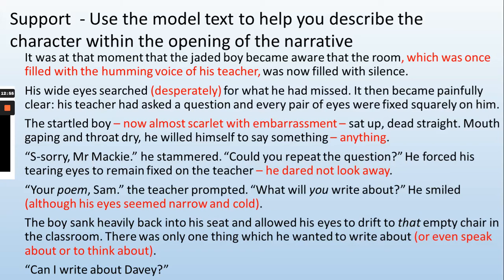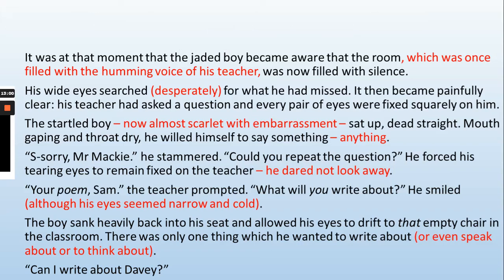I'm going to read through my example with my highlighted feature. 'It was at that moment that the jaded boy became aware that the room, which was once filled with the humming voice of his teacher, was now filled with silence. His wide eyes searched desperately for what he had missed. It then became painfully clear. His teacher had asked a question, and every pair of eyes were fixed squarely on him. The startled boy, now almost scarlet with embarrassment, sat up dead straight. Mouth gaping and throat dry, he willed himself to say something, anything. Sorry, Mr. Mackie, he stammered, could you repeat the question? He forced his tearing eyes to remain fixed on the teacher. He dared not look away. Your poem, Sam? the teacher prompted. What will you write about? He smiled, although his eyes seemed narrow and cold. The boy sank heavily back into his seat and allowed his eyes to drift to that empty chair in the classroom. There was only one thing he wanted to write about, or even speak about, or think about. Can I write about Davey?'